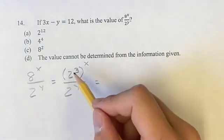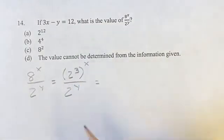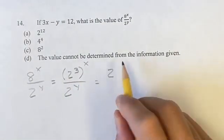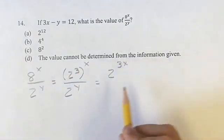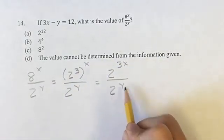So when you have one power to another power, you multiply them. So this is 2 to the 3 times x, so 2 to the 3x, over 2 to the y.